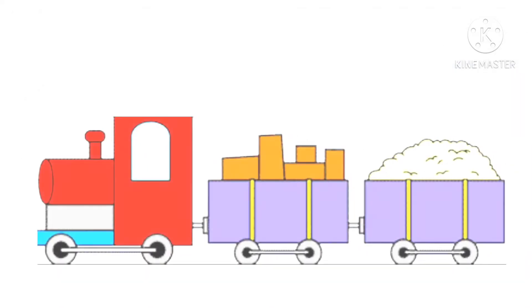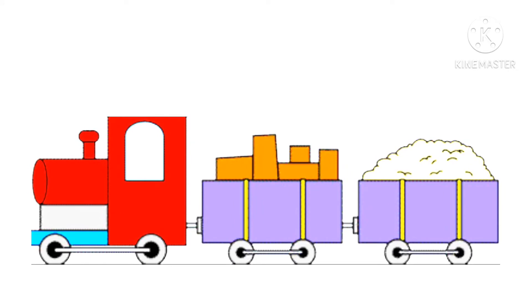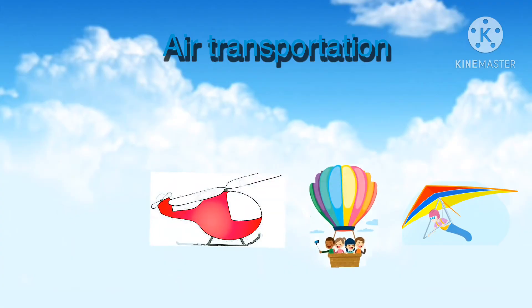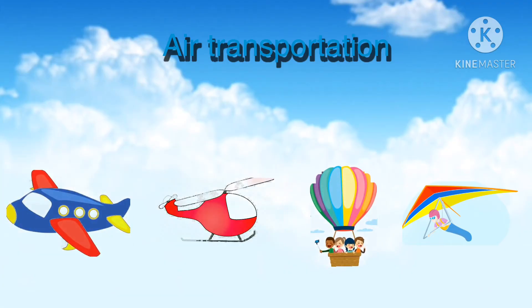Whereas, trains that carry goods are called goods trains. Let us now see what is air transportation. It is the transportation of goods or passengers by air. Aeroplane, helicopter, hot air balloon, glider are some of the means of air transportation.